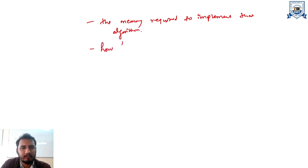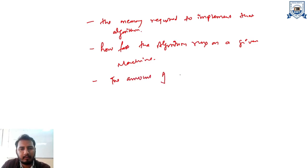The second one is how fast the algorithm runs on a given machine. This is called your time complexity of the algorithm. The third one is the amount of compression needed. We will discuss it in a bit in this lecture.